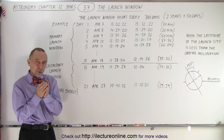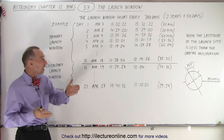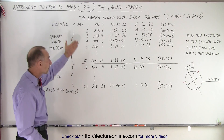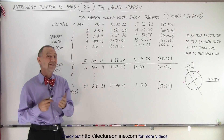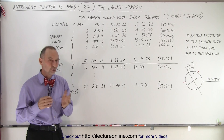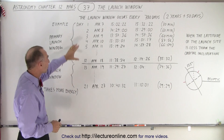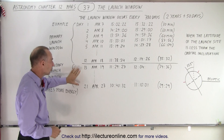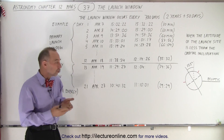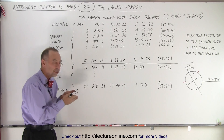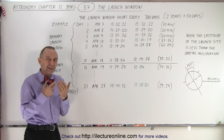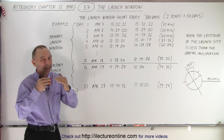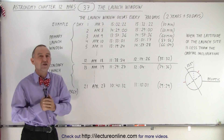That launch window has a certain period. In this example, we have a 21-day period along which we can send something to Mars. We have what we call our primary launch window and our secondary launch window. As we wait longer and longer during that launch window, we lose the opportunity to send a spacecraft to Mars with the least amount of energy required.